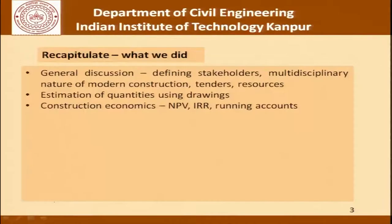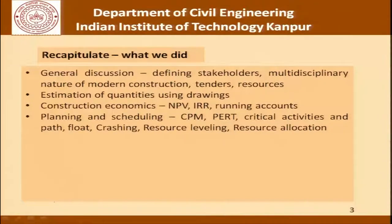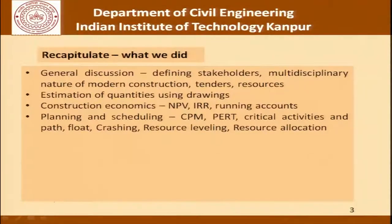From there we moved on to construction economics, learning about topics like net present value, IRR, running account bills, and so on. We then had a detailed discussion on planning and scheduling — CPM, PERT, optimistic time, pessimistic time, the likely time, identifying critical activities and critical path, floats, crashing of networks, resource leveling and resource allocation. That gave us insight into how we can reduce the duration of a project and whether it is always a disadvantage if short-term cost goes up, since including indirect costs may yield savings through rescheduling or additional resource allocation.